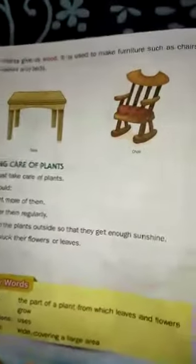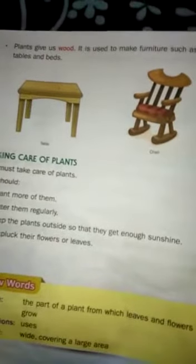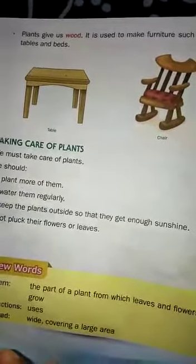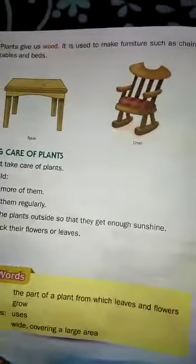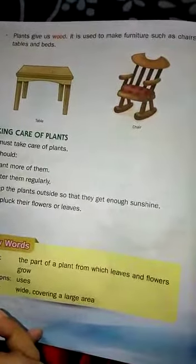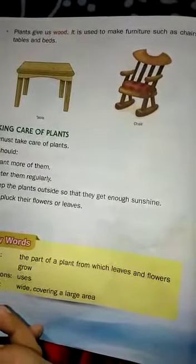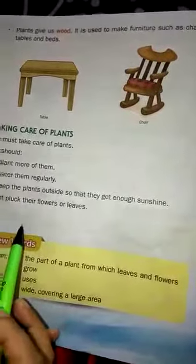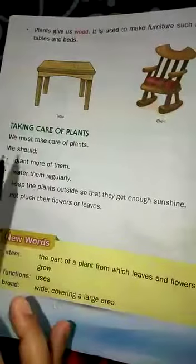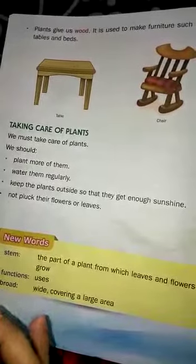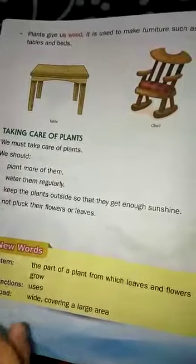Plants give us wood. It is used to make furniture such as chair, table, bed, etc. At our home we can see different types of furniture like bed, chair, table, almirah, etc. And these are made of wood. And this wood we get from plants. So in this way, plants are very useful for us and help us in many ways.